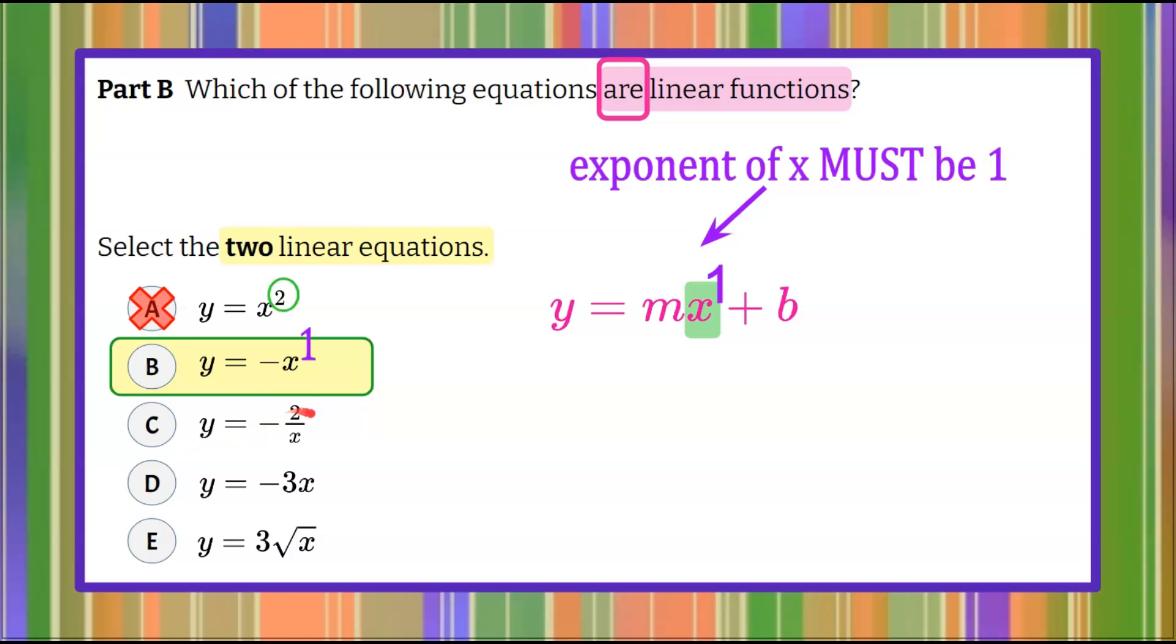y equals negative 2 over x. Well, x cannot be in the denominator. x needs to be in the numerator. And when we look at this, you'll learn in high school as well that the exponent of this x is actually negative 1. So when it moves down to the denominator, the exponent becomes positive. So c is not a choice.